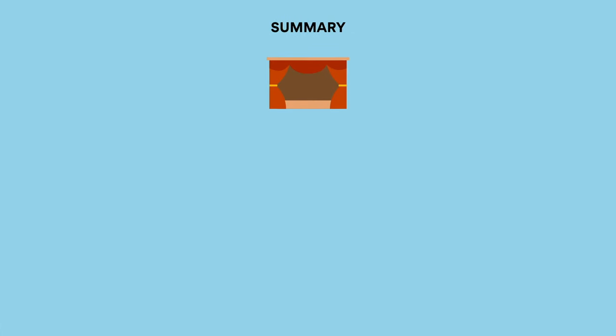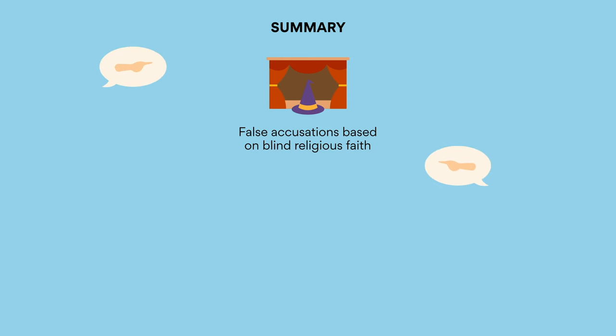Summary. Arthur Miller's 1953 realist play is based on the historical events of the 1692 Salem witch hunts. Although partially fictionalized, it depicts the very real consequences of false accusations based on blind religious faith, as Miller displays the dangers of such baseless rumors.